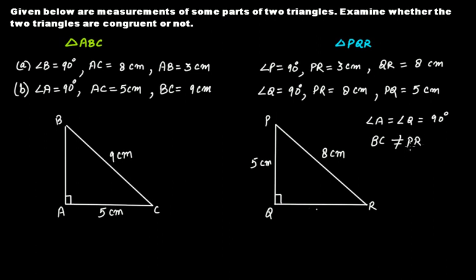BC is not equal to PR. For congruence, all corresponding angles and sides of both triangles must be equal. In this case, BC is not equal to PR, therefore these two triangles are not congruent.